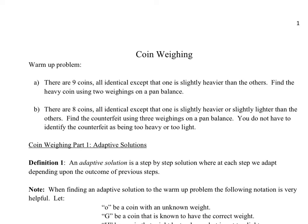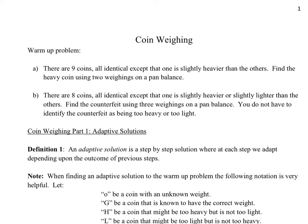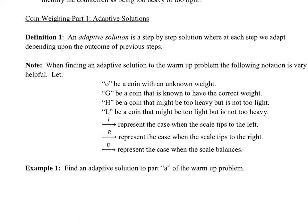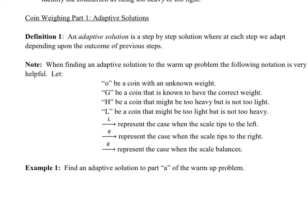We're going to discuss what we call adaptive solutions first to attack these types of problems. Later on, we'll discuss non-adaptive solutions. Adaptive is just like it sounds — you get to adapt throughout your solution. For example, if the scale tips to the left on the first weighing, you can decide to put different coins on for the second weighing, and so on.